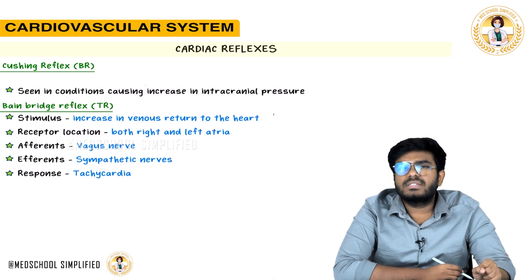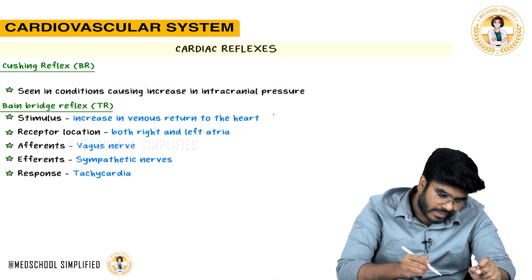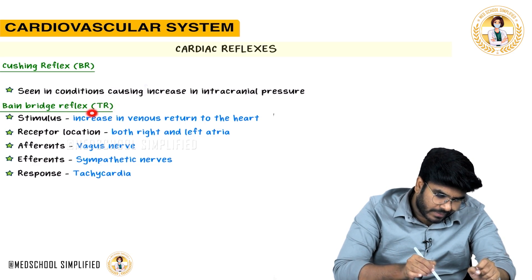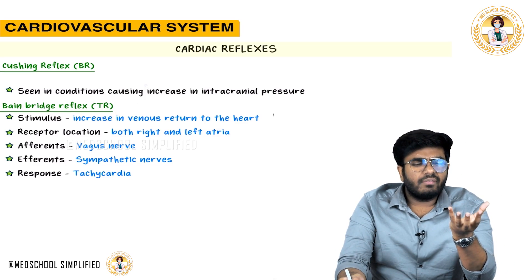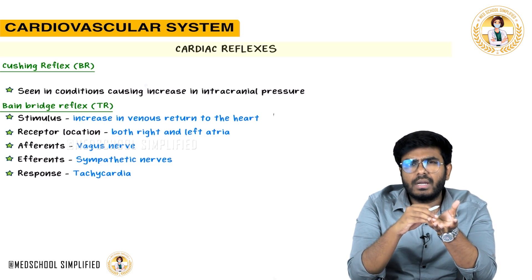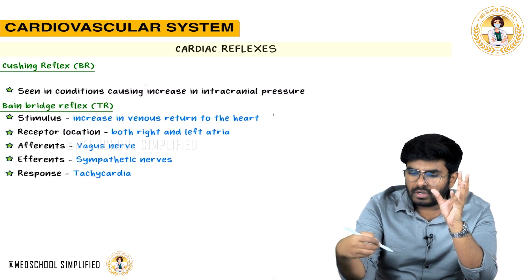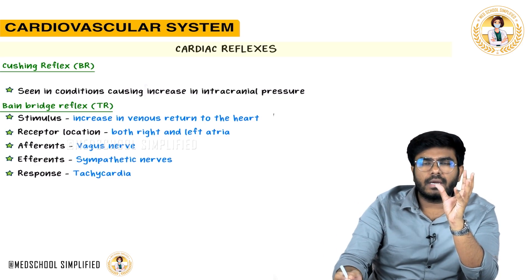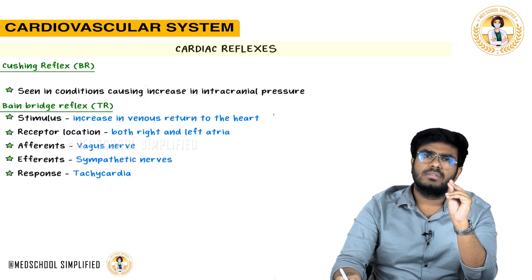Now let's discuss the Bainbridge reflex, which is an example of a tachycardic reflex. Think logically: whenever you send more blood to the heart, the heart has to work more. Whenever you increase venous return, putting more blood into the right atrium, a reflex happens such that heart rate increases.